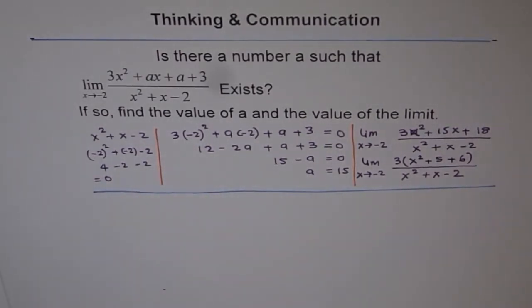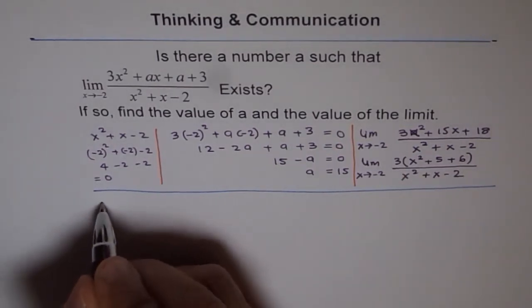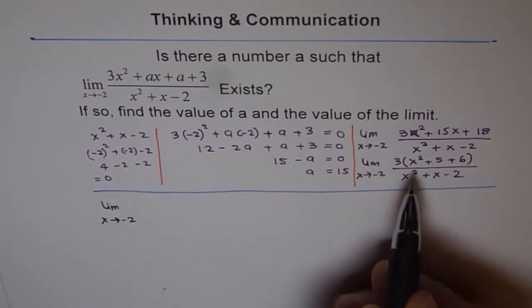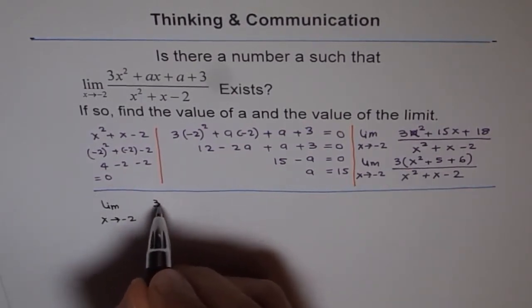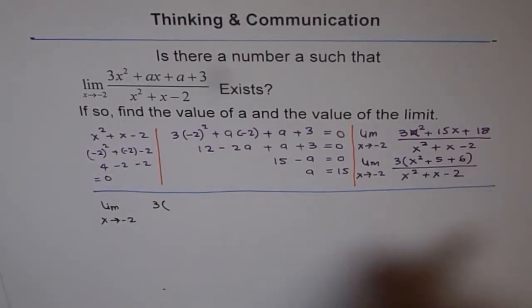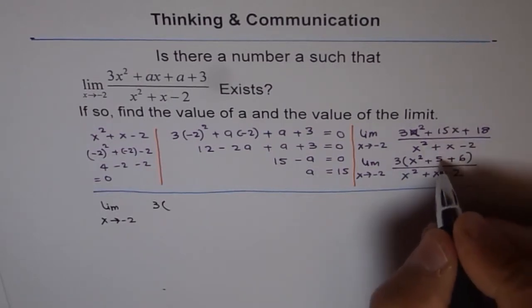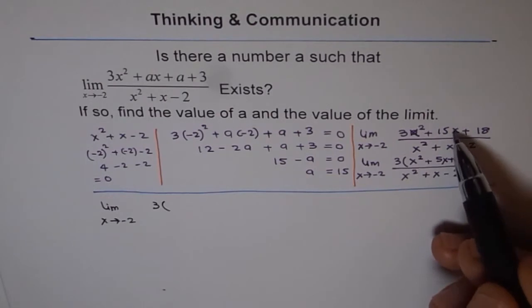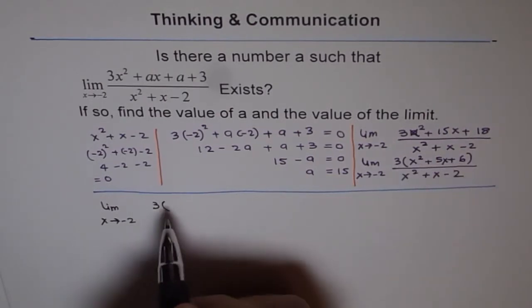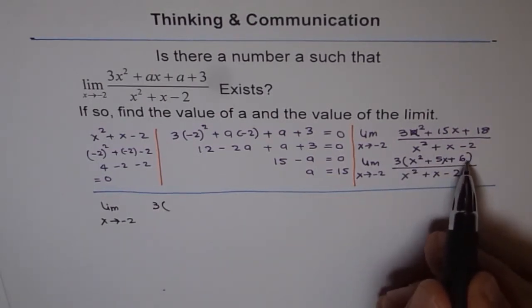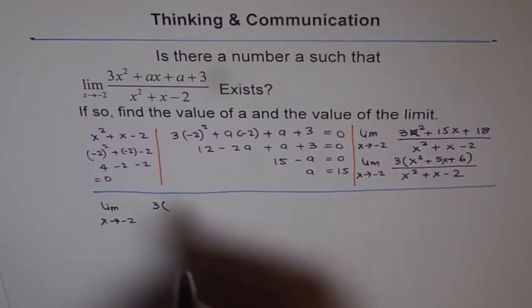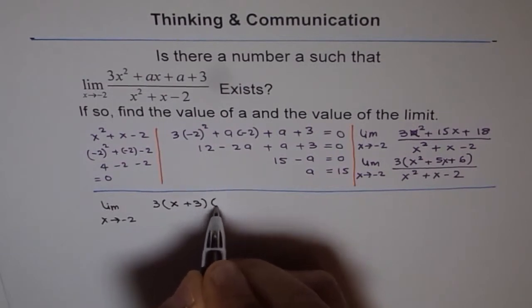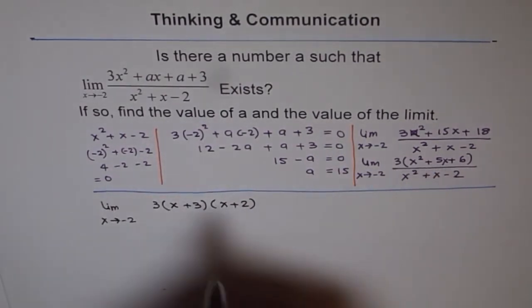Okay. So, we have this function here now which is limit x approaches minus 2 and 3. I forgot to write x here. Correct. So, it is 15x or 5x when we factor out 3. 3 times 2 is 6 and 3 plus 2 is 5. So, we can write this as x plus 3 times x plus 2. That is the numerator.